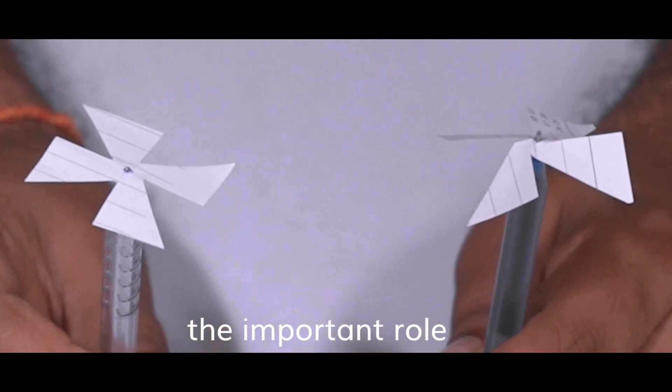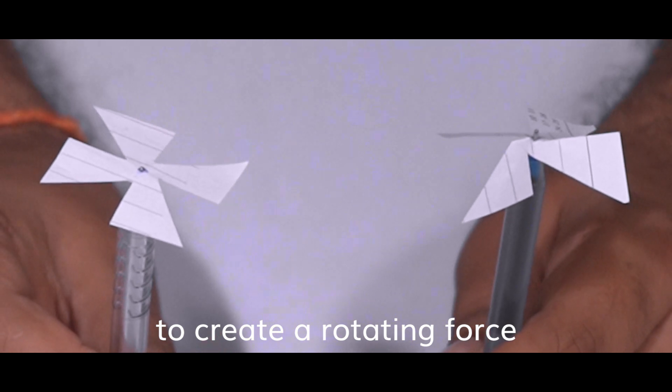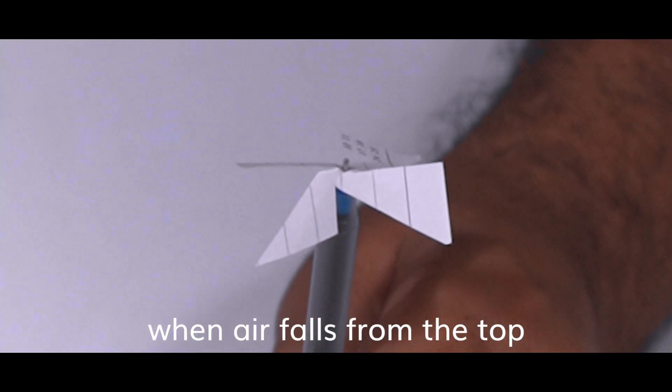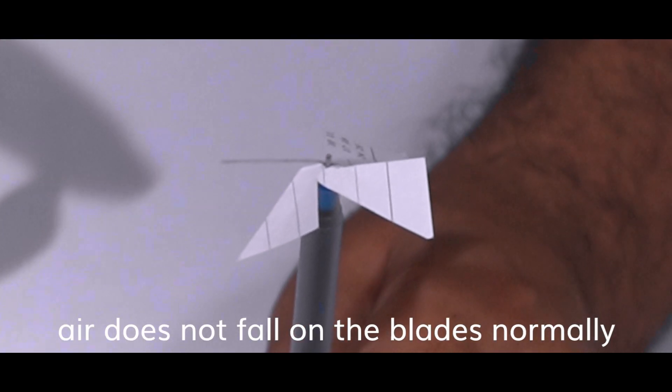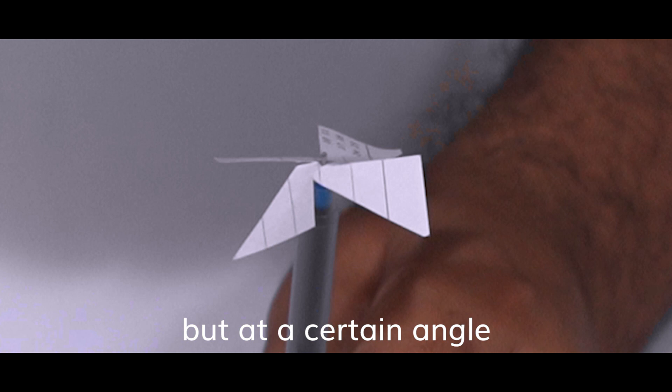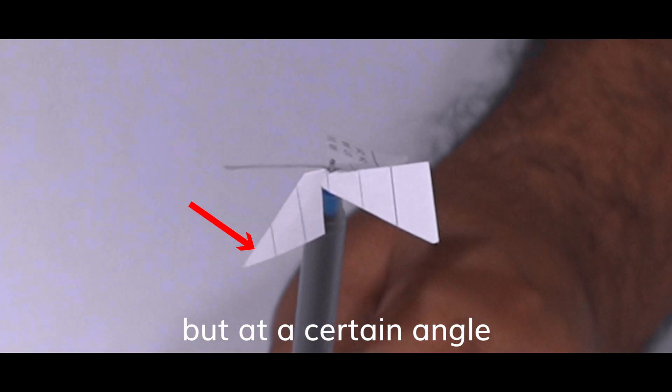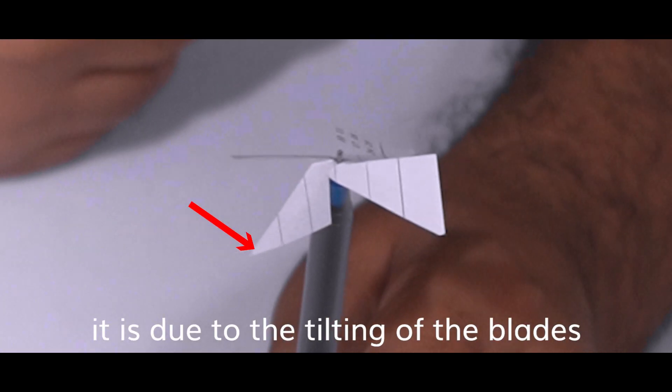Let us try to understand it now. When air falls from the top, air does not fall on the blades normally but at a certain angle. It is due to the tilting of the blades.